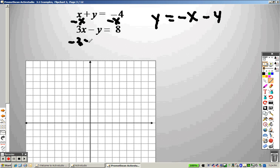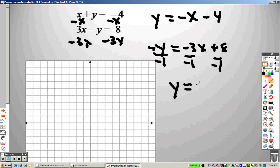And let's solve this one for y, so I subtract 3x on both sides, so I get negative y equals negative 3x plus 8. To get y by itself, I divide each one by negative 1, so I get y equals 3x minus 8.